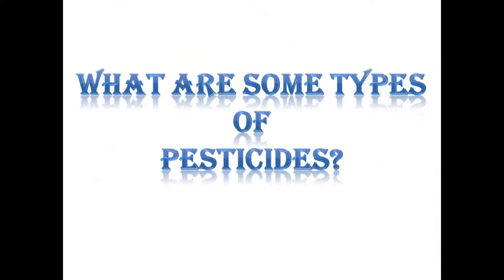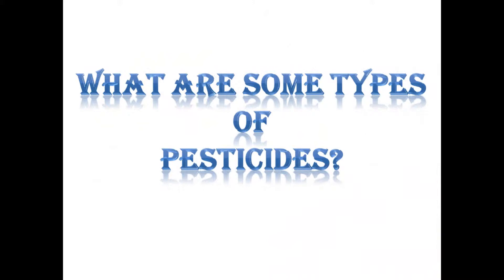So what are some types of pesticides? Antimicrobials to control germs and microbes such as bacteria and viruses. Fungicides to control fungal problems like molds, mildew, and rust. Herbicides to kill or inhibit the growth of unwanted plants, also known as weeds. Insecticides to control insects.